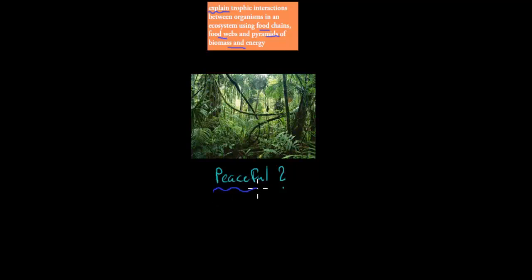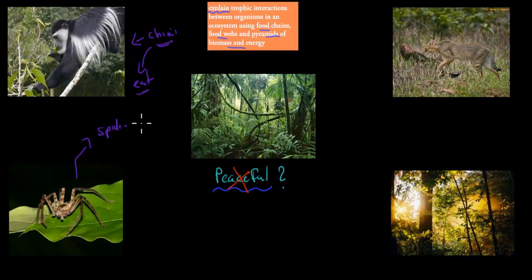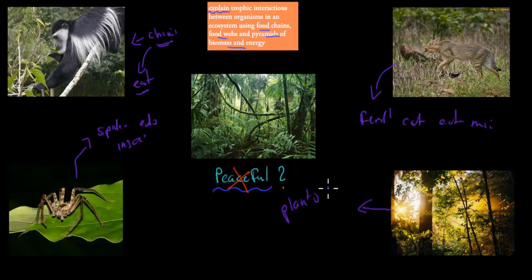Before I start I want to ask a quick question. If you look at this jungle here, what do you say - is it quite peaceful? Is there much going on or is it all just peaceful? The answer is it's not peaceful at all. There is a lot of stuff going on. There might be a monkey or a type of chimp that feeds off grass. There might be a spider that feeds off different insects. And there might be a feral cat in the jungle that eats some of the mice. Even the plants are competing - they're fighting each other for sunlight, making sure they get it by being the tallest.